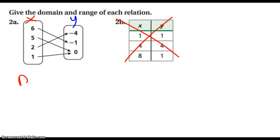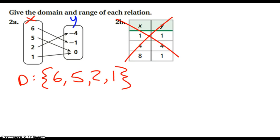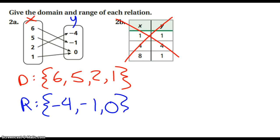My domain for this particular map is going to be six, five, two, one. You don't have to go in numerical order — you just want to go in the order that they're presented to you. And then my range will be negative four, negative one, zero. That's how you do the domain and range for a table and or a map.